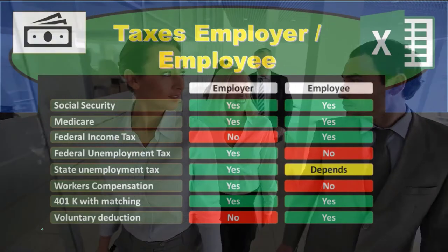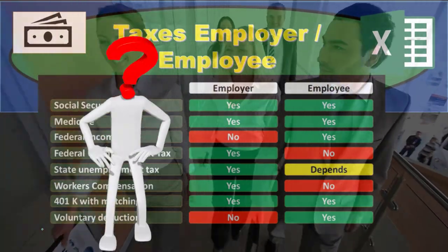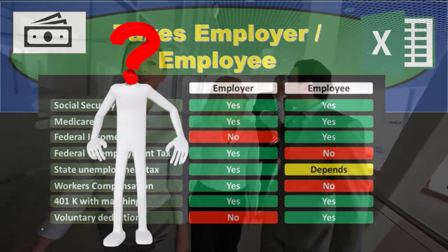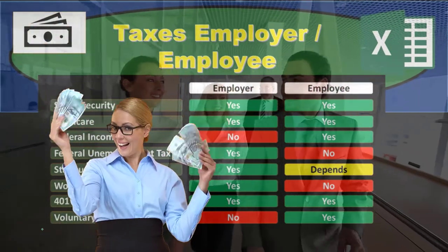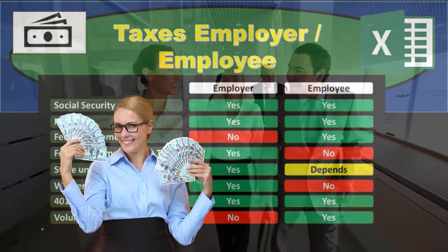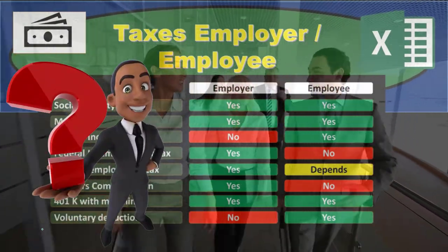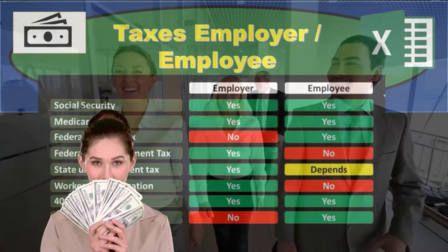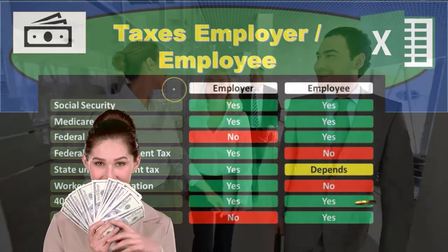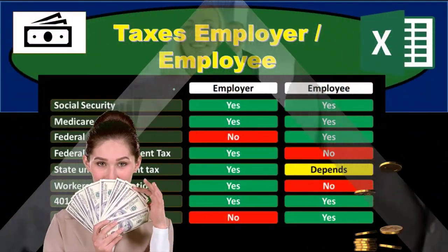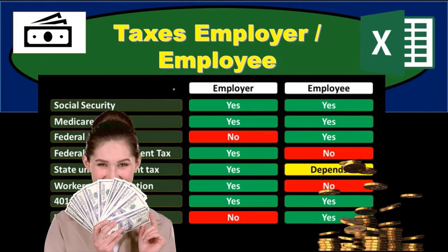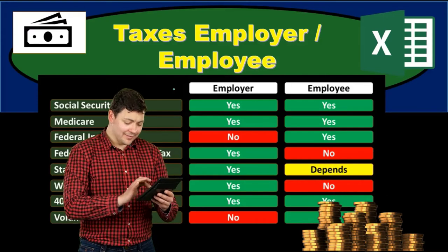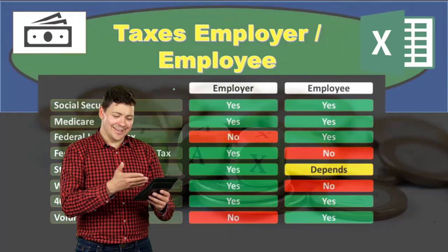This is a confusing question because in one sense you might argue that they're all employer-responsible taxes, since the employer is really the one facilitating the payment and making the actual logistics happen. However, the question is really whether it's being taken out of the employee's gross pay to get down to net pay, or whether it's something the employer is paying over and above the calculation of gross pay.